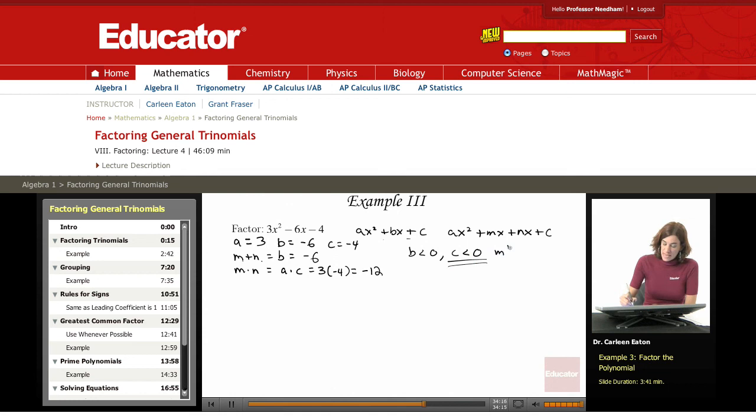When c is less than 0, m and n have opposite signs. Whether b is positive or b is negative, if c is less than 0, then you've got a product here that's going to be less than 0, and they're going to have opposite signs.